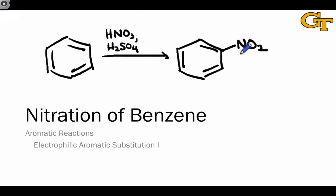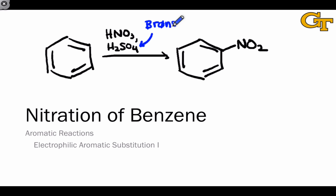Nitration of benzene establishes an NO2 group attached to the aromatic ring. Here again we see the use of H2SO4 as a very strong Brønsted acid promoting generation of the active electrophile. As we saw in sulfonation, we're going to see a transformation of the Brønsted acidity of H2SO4 into the Lewis acidity of the active electrophile, which here is the NO2+ cation.